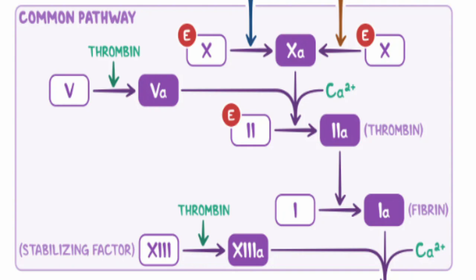As we move down to the common pathway, we can see that factor X is activated independently by both the intrinsic and extrinsic pathways and can occur after activation of either one. This is an incredibly important fact later down the line. As we will see, if we want medication to be effective, it would either have to simultaneously affect both the intrinsic and extrinsic pathways, or affect the common pathway to stop the cascade downstream.